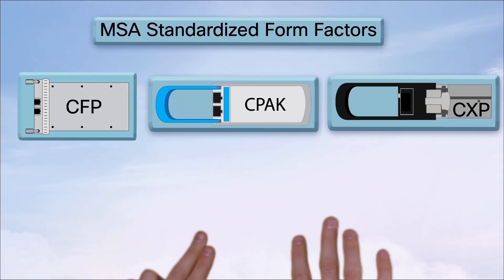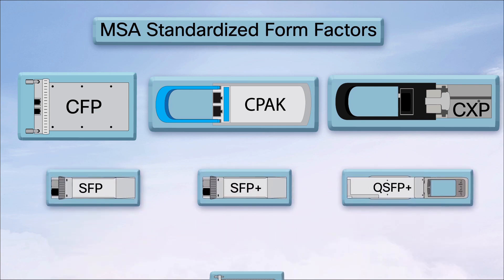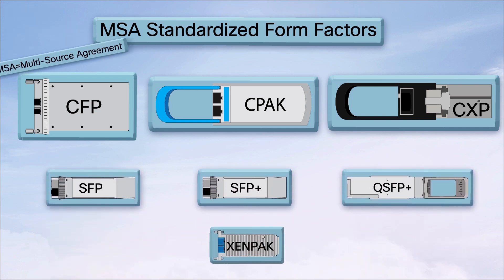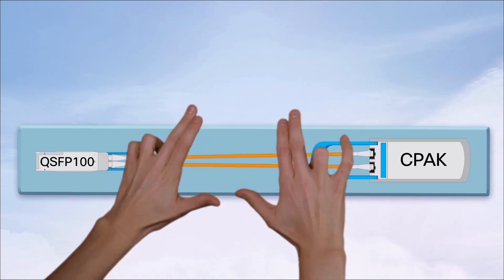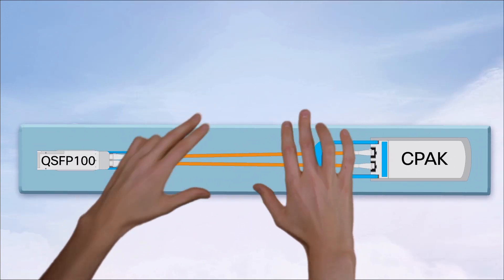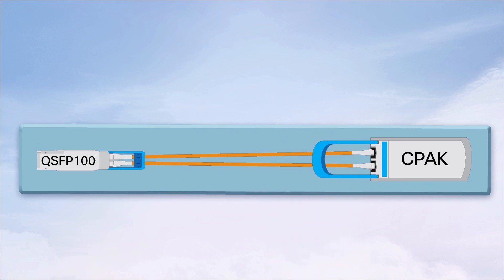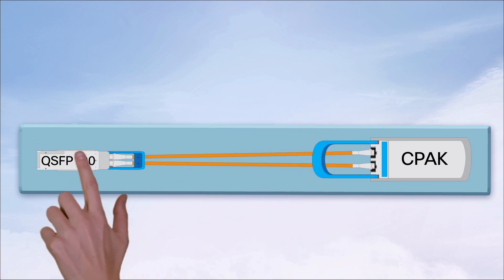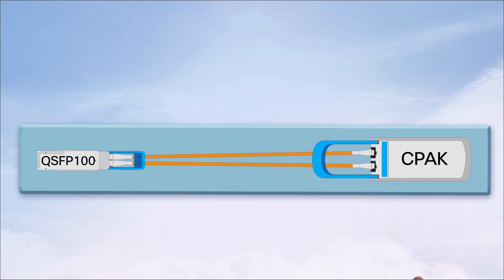MSAs usually cover product form factors like SFP and QSFP. Fortunately, since optical interfaces are mostly defined separately from the port-specific standard, any two transceivers that comply with the same optical interface spec can talk to each other — or interoperate — regardless of their form factor.